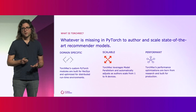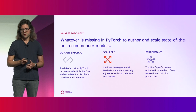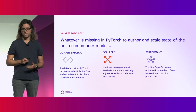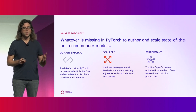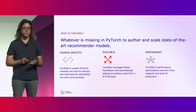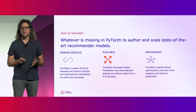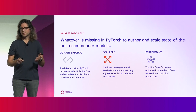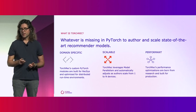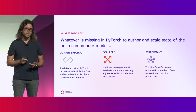It's domain-specific — we have custom modules built for recommender systems and optimized for distributed runtime environments. It's scalable: it leverages model parallelism to automatically adjust to the author's demands from one GPU up to N GPUs. And most importantly, it's performant. TorchRec's performance optimizations are born from research and built for production. We're constantly scanning the latest research from academia and industry, and refactoring existing features to ensure they continue to perform at state-of-the-art levels.